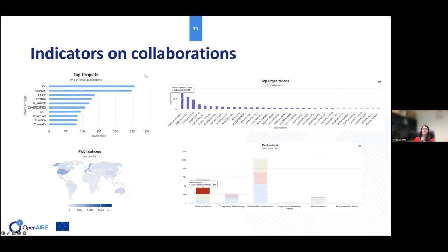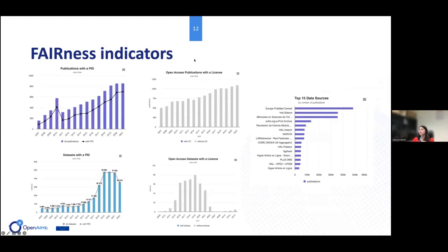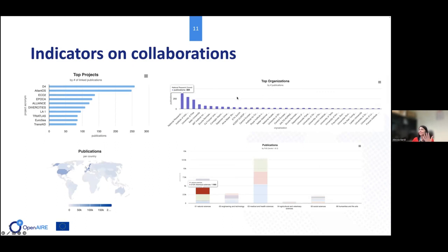For collaboration indicators, we can analyze which project grants your community participates in, but also collaborations based on affiliations of co-authors to understand which organizations work together to achieve research results. We can present this as a list of organizations, or plot it on a map to visualize collaborations with different countries.